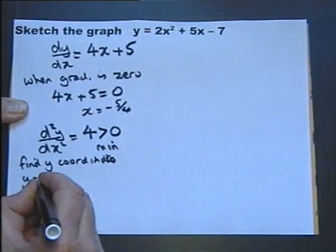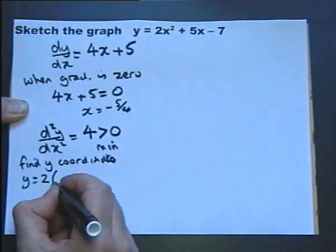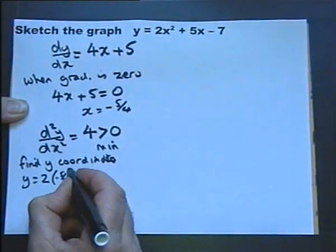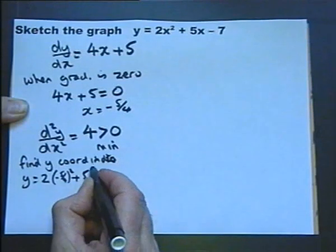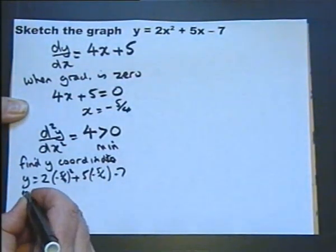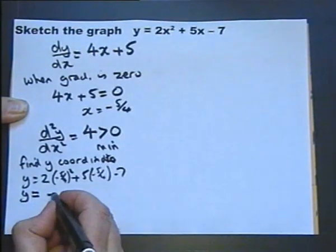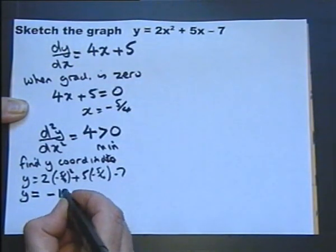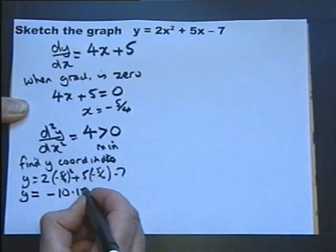So the y coordinate is going to be 2x squared, which is minus 5 over 4 squared, plus 5 minus 5 over 4s minus 7. And I worked that out earlier and it comes to minus 10 and an eighth, which I'll write as a decimal.